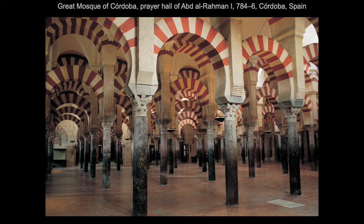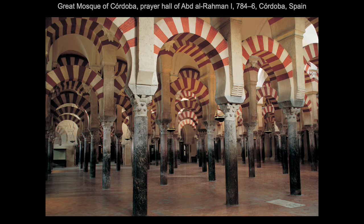Rhythm is based on repetition and is a basic part of our existence — we have the rhythm of the seasons, the cycles of the moon, and rhythms of waves on the shoreline, all serving to mark the passage of time. Music and dance also mark rhythm in a similar way. Visual rhythm deals with the arrangement of elements so that they move the viewer through a piece — in the visual arts, rhythm is active, pulling the viewer along and making us feel a certain way.